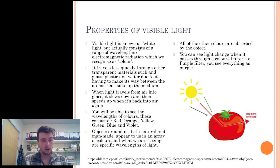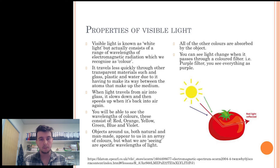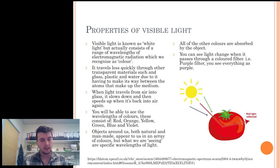Visible light is known as white light, but only consists of a range of wavelengths of electromagnetic radiation which we recognise as colour. It travels less quickly through transparent materials such as glass, plastic and water, due to having to make its way between the atoms that make up the medium. When light travels from air into glass, it slows down and speeds up again when it returns to air. The wavelengths of colour we can see consist of red, orange, yellow, green, blue and violet.